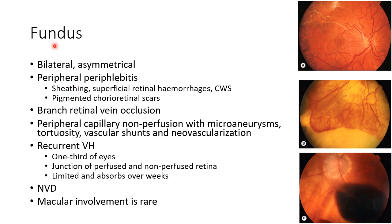Coming to the fundus findings in a case of Eales disease: Eales disease is usually bilateral but asymmetrical. The key fundus findings are peripheral periphlebitis, as you can see in this picture. There will be sheathing, superficial retinal hemorrhages, and cotton wool spots. There can also be pigmented chorioretinal scars.